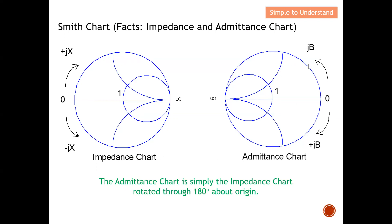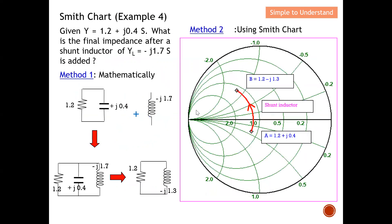In short, impedance and admittance charts have reverse behavior — what is plus in one is minus in the other, and many characteristics behave in an opposite manner. Now let's start by discussing Example 4. We are given an admittance — remember, this is admittance rather than impedance. The admittance components are connected in parallel, so I draw this as parallel: 1.2 + j0.4. What is the final impedance after adding a shunt inductor?